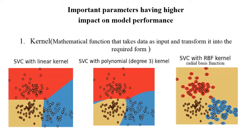There are important parameters having higher impact on model performance. The first parameter is kernel, which is a mathematical function that takes data as input and transforms it into the required form. There are different types of kernels as shown in this figure: linear kernel, polynomial kernel, and RBF kernel.